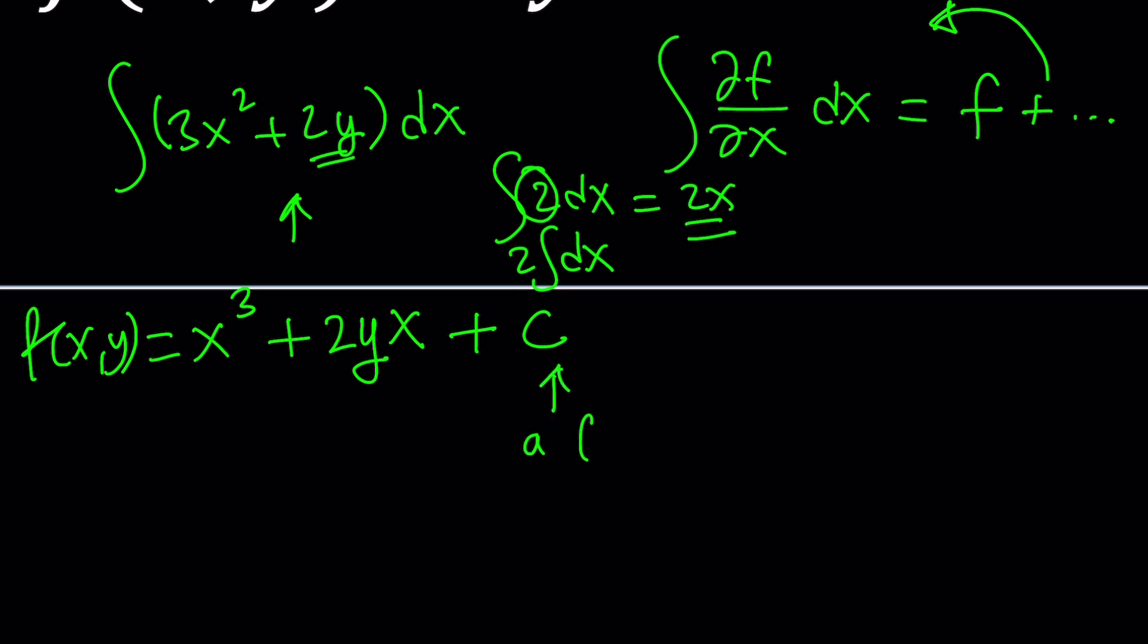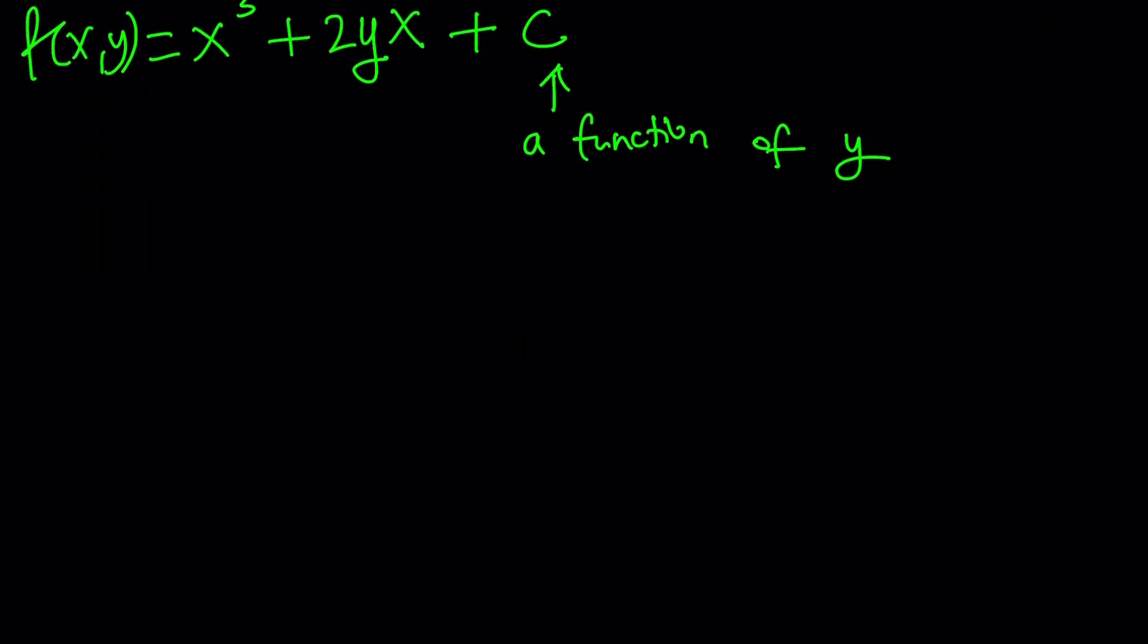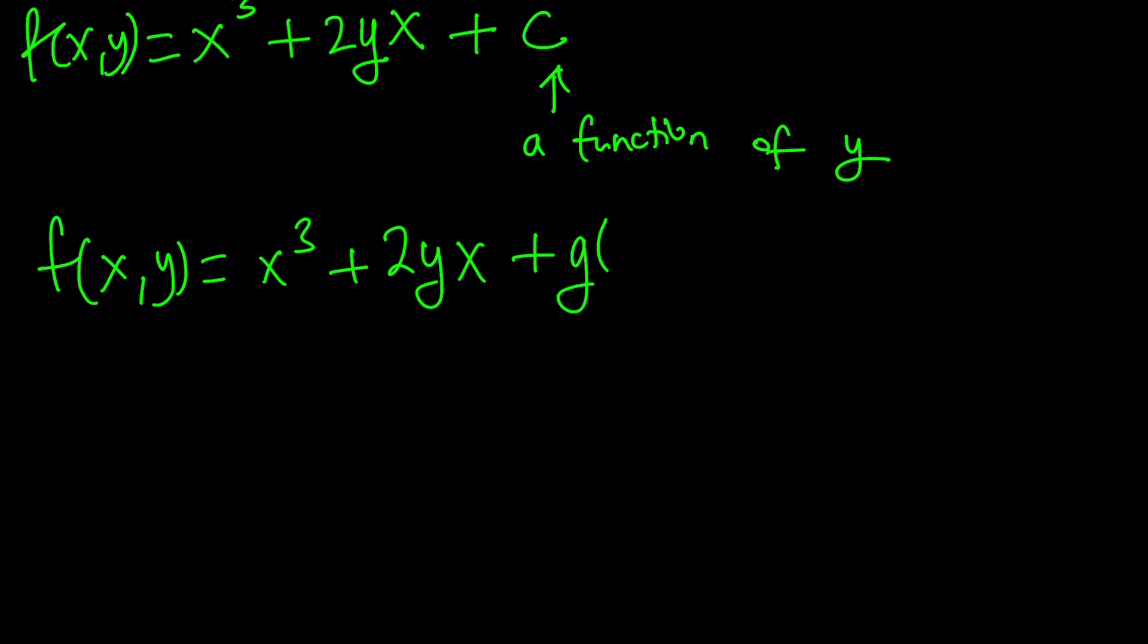And when you integrate with respect to x, y is considered a constant. So instead of c, I can add a function of y. And why not just y? Because we don't necessarily know it's y. It could be y², y³, y to the millionth power - something that is a function of y. And when you differentiate with respect to x, it'll be zero. Make sense? So let's go ahead and replace the c with a function of y. How can we represent a function of y? How about g(y)? We used f already in the original, so let's use g, right? And then we can use h if needed.